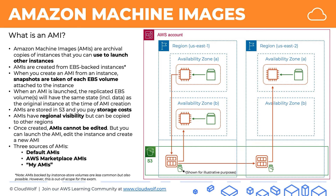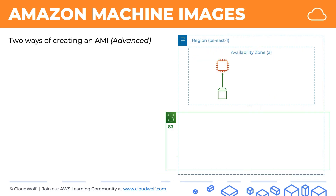One more important thing: there are two ways of creating AMIs. This is quite an advanced topic, but it's still important to know. Here we've got our EC2 instance with the EBS volume. The first approach is to take the EC2 instance and to create an AMI from it, and we will have our AMI from an EC2 instance.